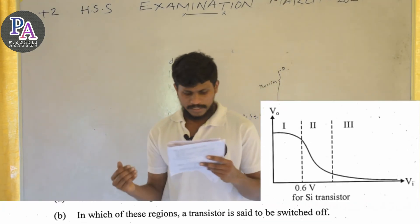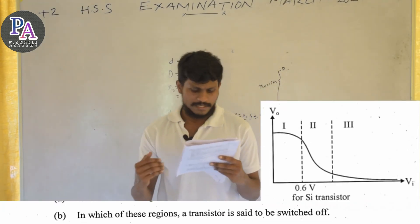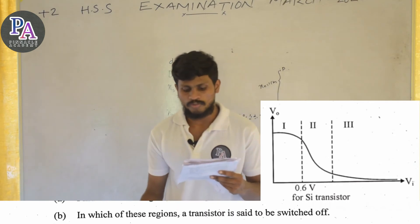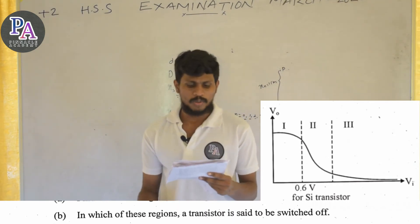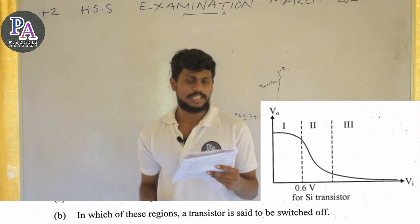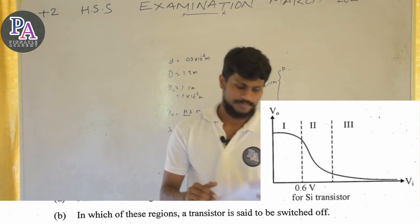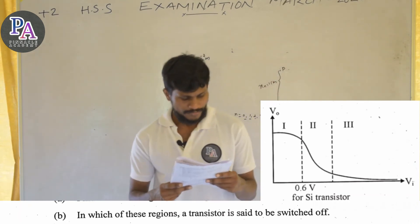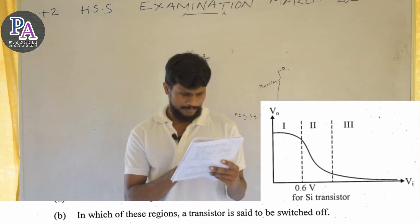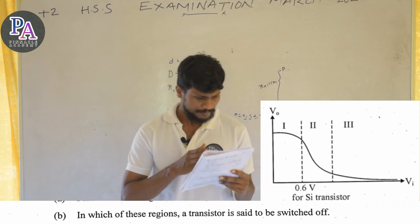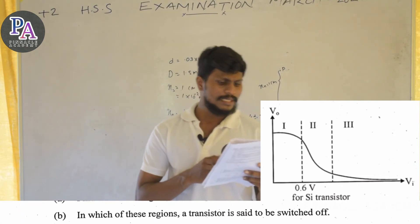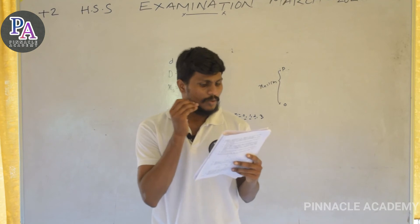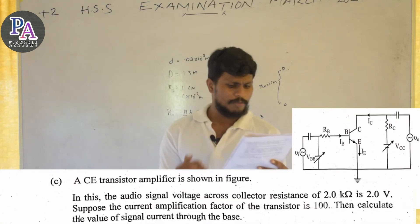In which region is a transistor said to be switched off? The cutoff region is where the transistor is switched off. In the saturation region, the transistor is switched on.